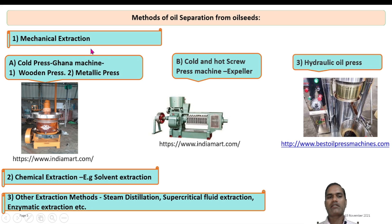The mechanical extraction process is categorized into three groups. First is the cold press process — the traditional process called the Gana machine — which uses a wooden press or metallic press. Second is the cold and hot screw expeller, using mechanical expeller machines to extract oil from oil seeds by mechanical pressing. Third is the recently developed hydraulic oil press system, where the cold press Gana is converted into a hydraulic press system, using hydraulic pressure to press and remove oil from the oil seeds.